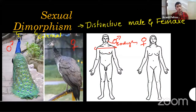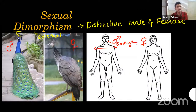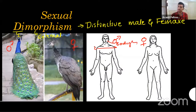You can't call it sexual dimorphism if only the genital organs are different — the whole body must be comparatively different between genders. For example: dogs — you can't differentiate male and female without checking the genital organs, so dogs are not an example of sexual dimorphism. But elephants — male elephants have tusks, female Indian elephants do not.